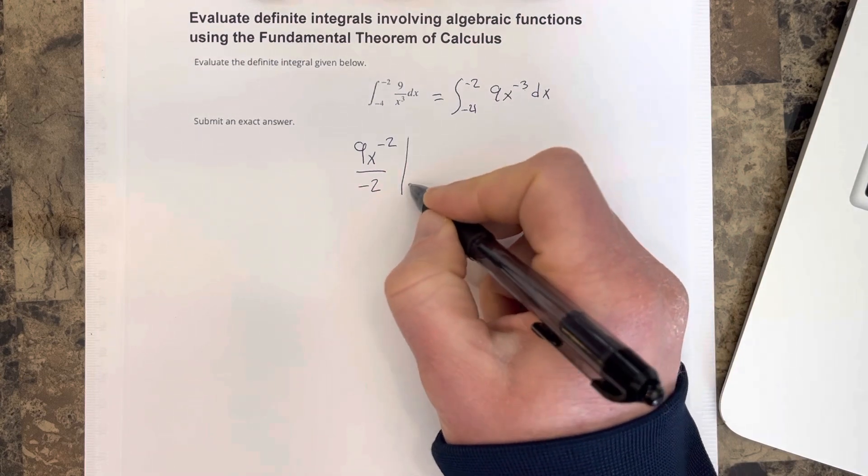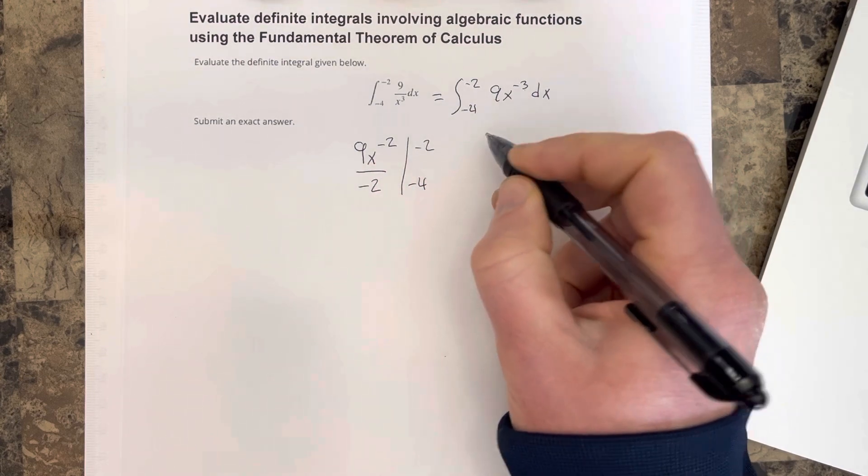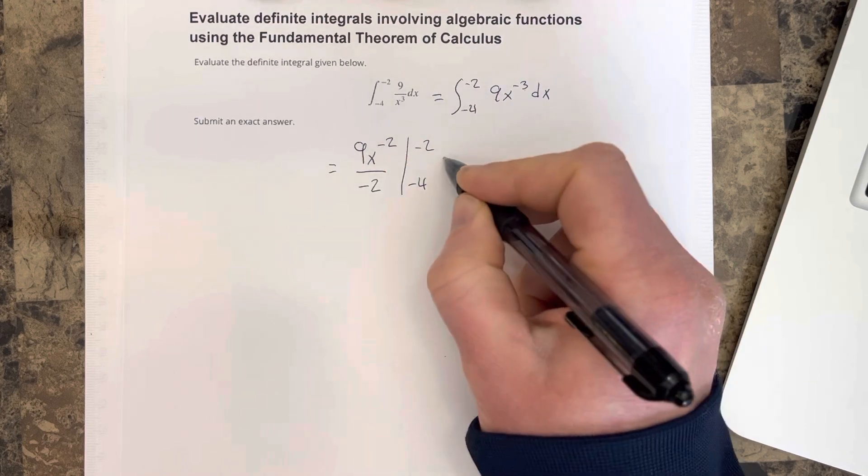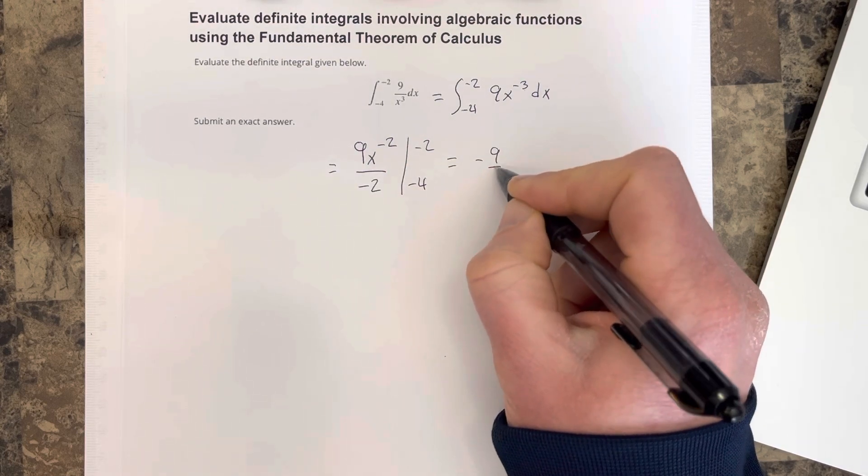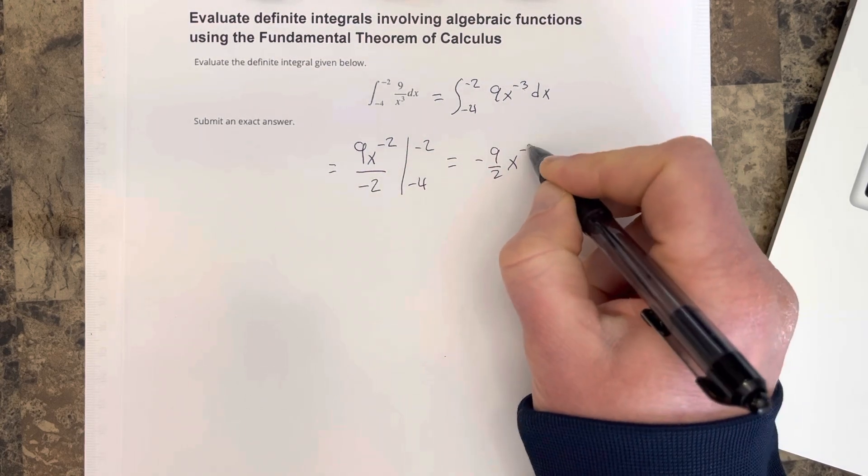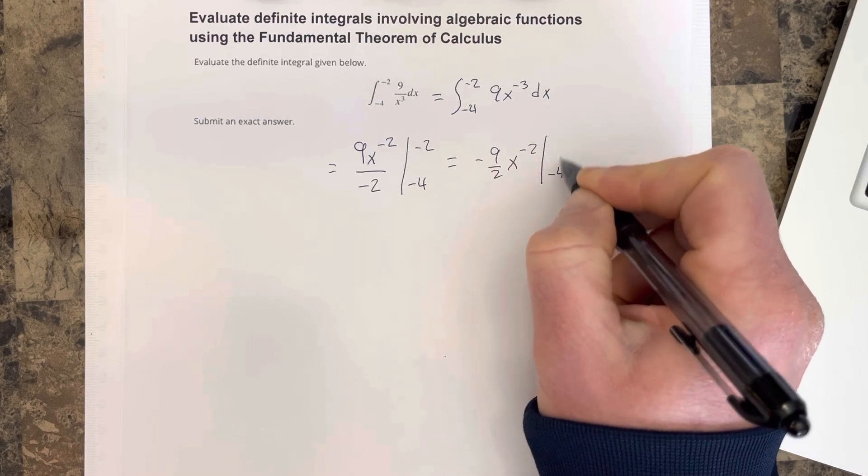And we're going to evaluate that from negative 4 to negative 2. And that's going to equal negative 9 halves x to the negative 2 from negative 4 to negative 2.